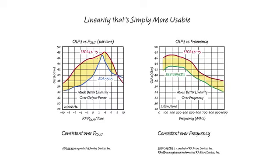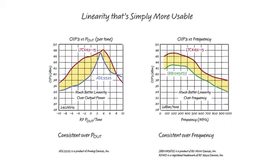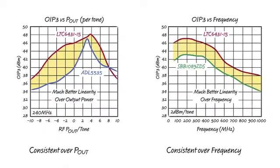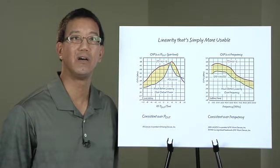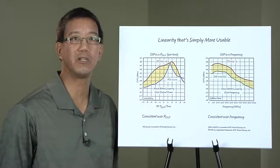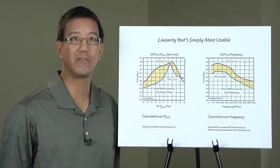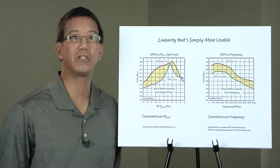Linearity is actually much more than just a single number in a datasheet. It's important that an amplifier maintain its linearity performance over a wide range of operating conditions, particularly RF output power and frequency. In this regard, the LTC6431-15 has some amazing specs. The left graph shows output IP3 performance over RF output power. Compared to competitive products, the LTC6431-15 offers amazing linearity over a far wider range of output power. The right graph shows output IP3 performance versus frequency. Compared to competitive products, the LTC6431-15 offers superior performance regardless of frequency, with performance good enough for IF amplifiers, ADC drivers, CATV amplifiers, or 700-800 MHz LTE amplifiers.